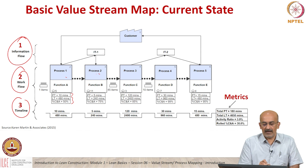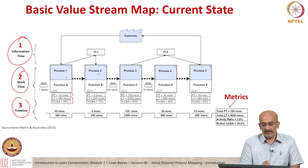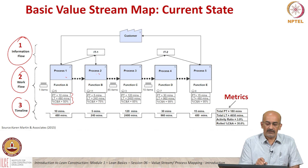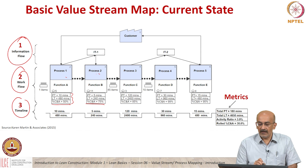For each process there is a metric that is put. PT is the process time, LT is the lead time, and the percentage C&A you see here is the number of times something that goes out has to be repeated in the process — it is how much rework happens. 50 percent rework is very high, 75 percent as well.